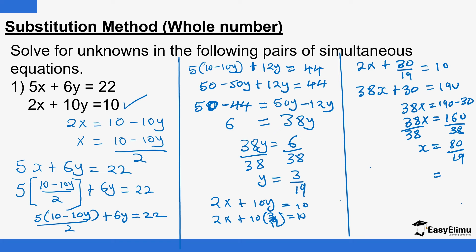So x equals 80 over 19. Converting to a mixed number: 19 times 4 equals 76, so 80 over 19 is 4 and 4 over 19. Therefore x equals 4 and 4/19, and y equals 3/19. That is how you solve for the unknowns.